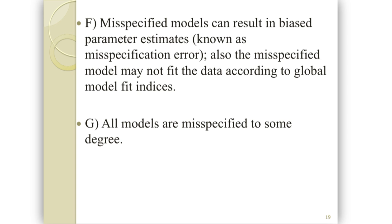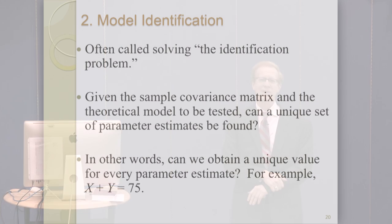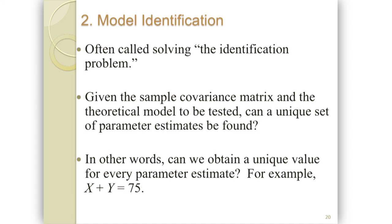Stage two is model identification. This is one people don't really think too much about, but it's kind of crucial. Given the data we have and the model we're interested in testing, can we obtain a unique set of parameter estimates? If I want to know the real influence of x on y and I run my model, do I get a particular estimate every time? If the answer is no, I can't trust the results.